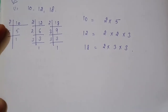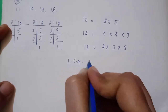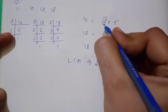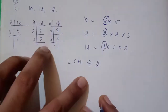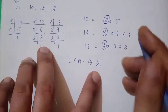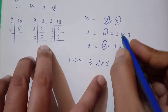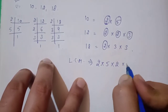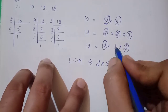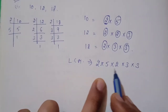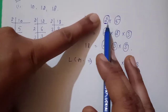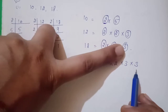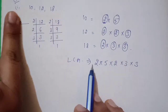In HCF we take the common factors, but now I am finding the LCM. For LCM, I start with the first number. I write down 2 — this covers all the 2s, since 2 is common across the factorizations. Next I take 5; no other 5 is there, so I include it. The next 2 is already covered. Then I take 3; this 3 is common, and the remaining 3 is also included. In LCM you write the numbers that together cover all factors of every number.